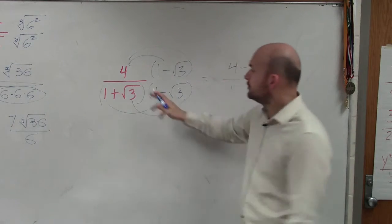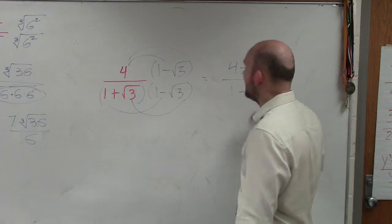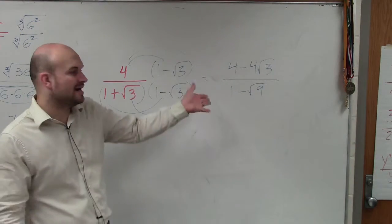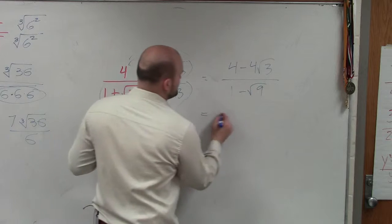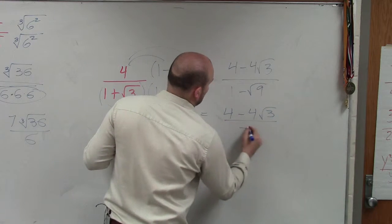1 times 1 is 1. The square root of 3 times negative square root of 3 is negative square root of 9. Well, the square root of 9 is 3. 1 minus 3 is negative 2. So therefore, I have 4 minus 4 square root of 3 divided by negative 2.